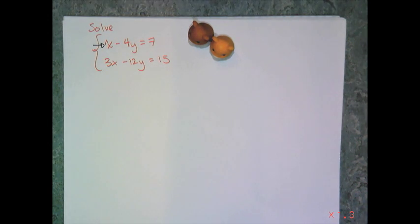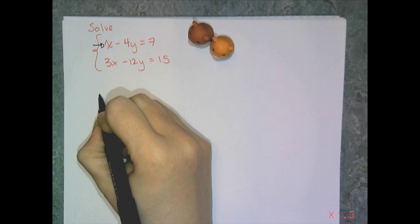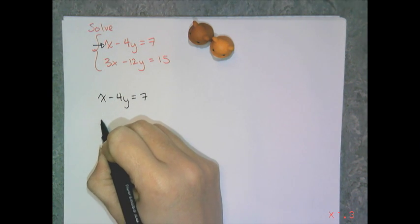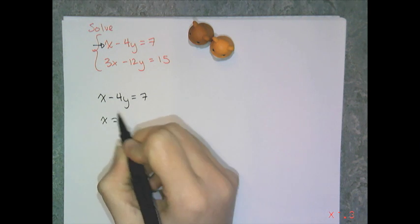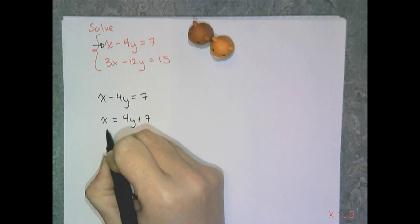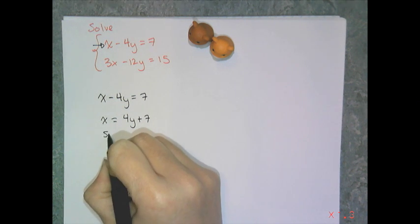So that means it's really easy to get it solved for x equals. So I'm going to take x minus 4y equals 7 and solve it for x equals. So I'm going to get x equals, and I add 4y to both sides. So I get 4y plus 7. Now this equation is substitution ready.